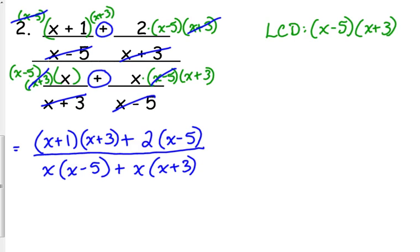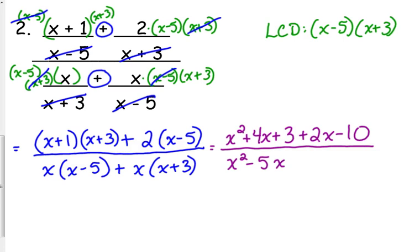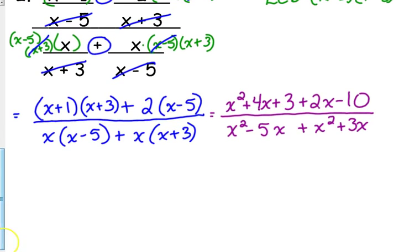Now we have to multiply this out because of those big pluses in the top and in the bottom. We've got to multiply out and find like terms, combine like terms and then factor. So we've got x squared plus 4x plus 3 plus 2x minus 10 over x squared minus 5x plus x squared plus 3x. Combine like terms: x squared plus 6x minus 7 in the top, bottom 2x squared minus 2x.